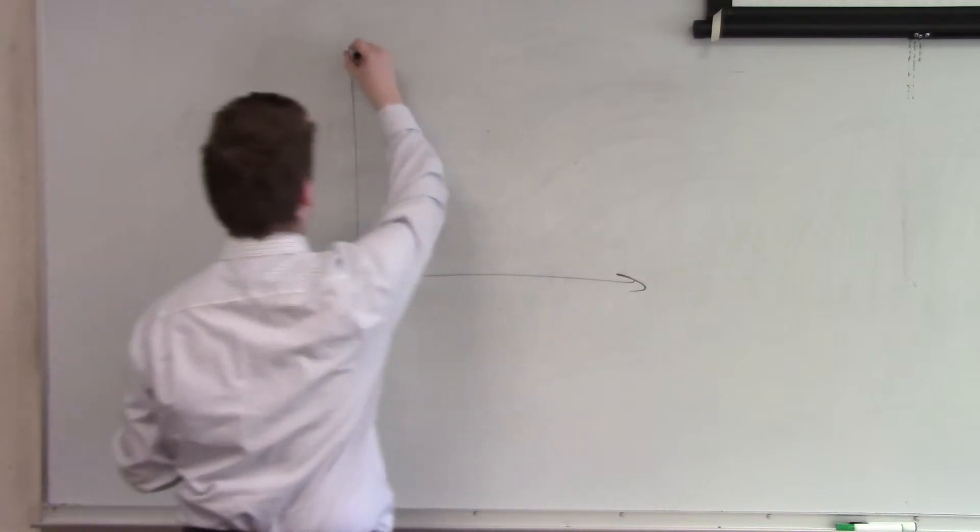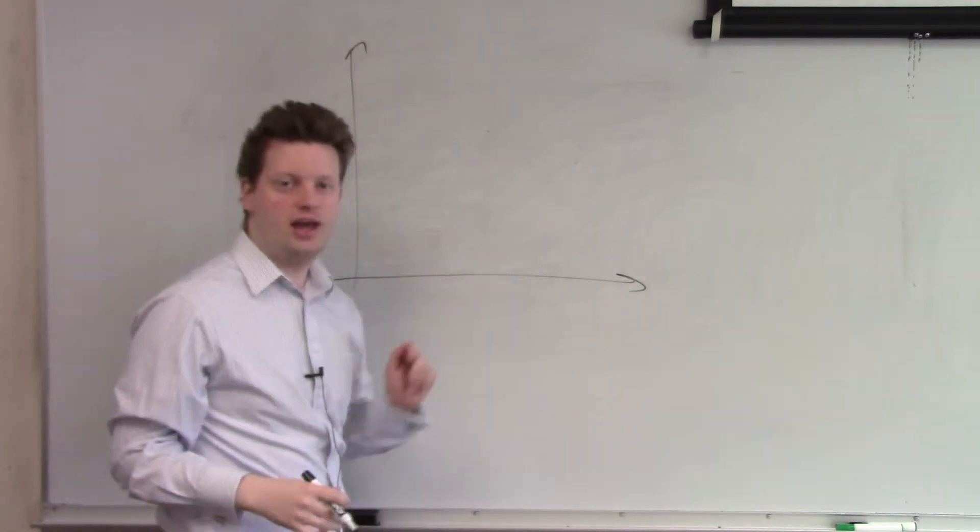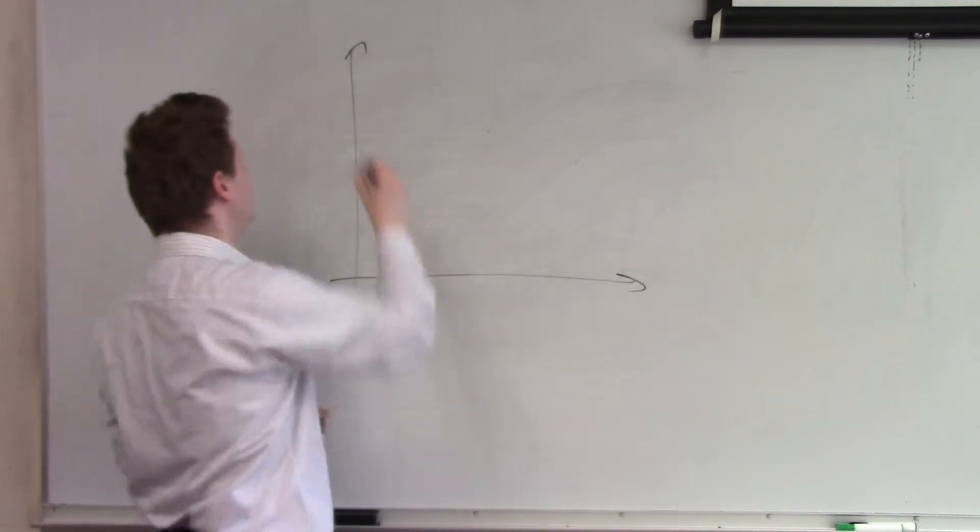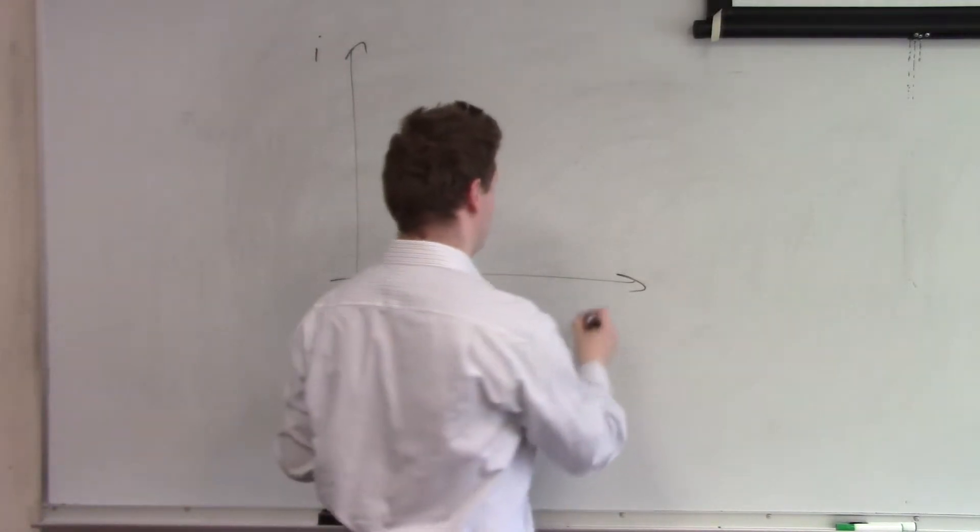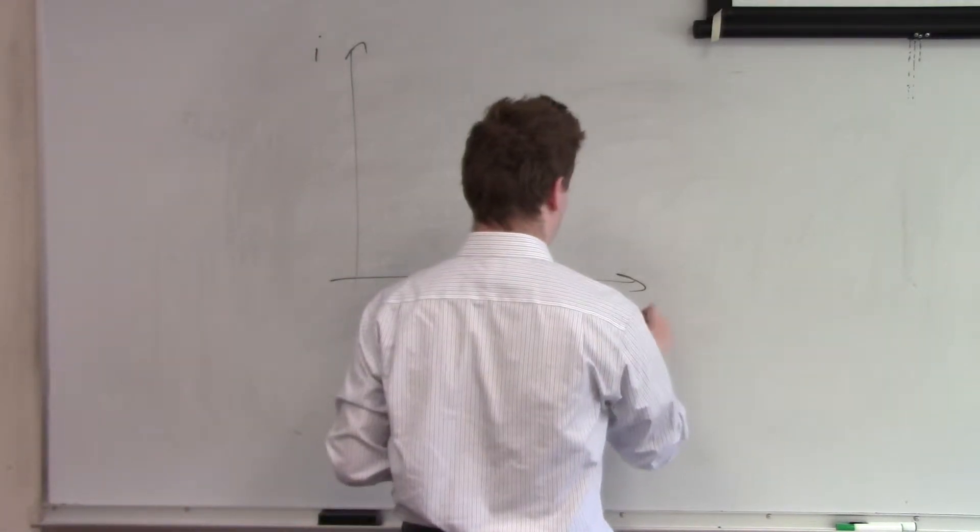So we have the two axes. The vertical axis here will show us the interest rate and the horizontal axis will show us the quantity of loanable funds.